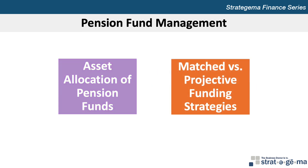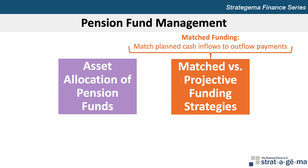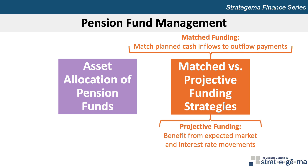Pension fund management can be classified according to the strategy used to manage the portfolio. With a matched funding strategy, investment decisions are made with the objective of generating cash flows that match planned outflow payments. An alternative strategy is projective funding, which offers managers more flexibility in constructing a pension portfolio that can benefit from expected market and interest rate movements. Some pension funds segment their portfolios, with a portion being used for matched funding and the rest for projective funding.